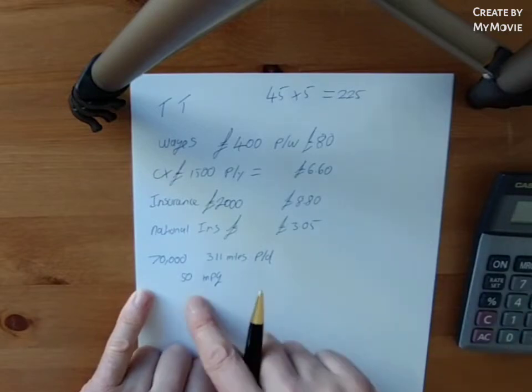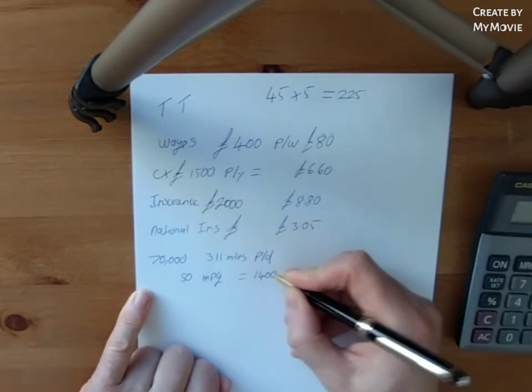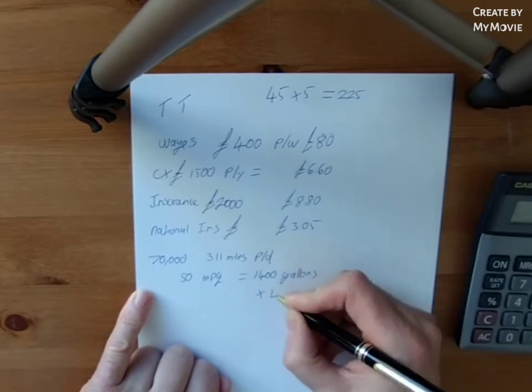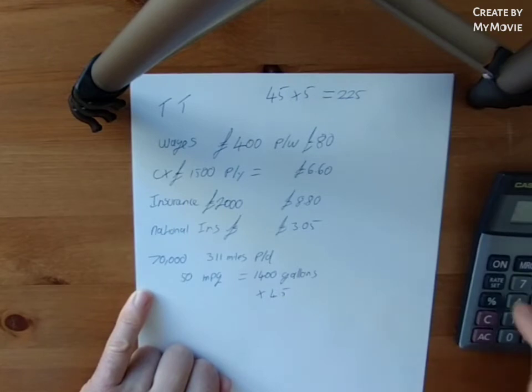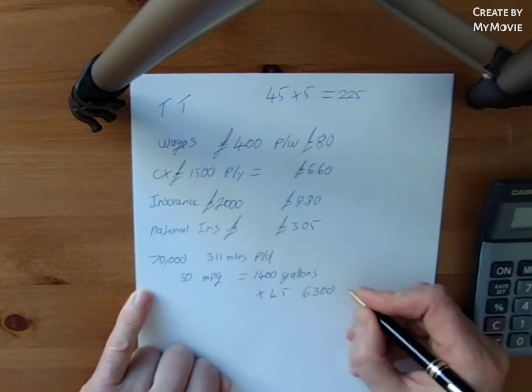70,000. So how many gallons do you need to cover that? So 70,000 divided by 50 equals 1,400 gallons. We have to multiply that by 4.5 to give us litres. So 6,300 litres.